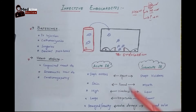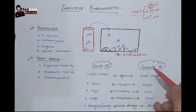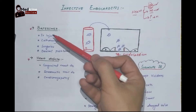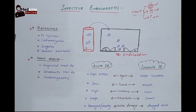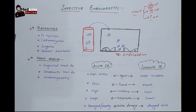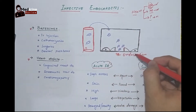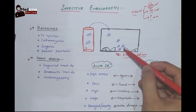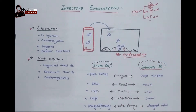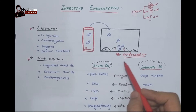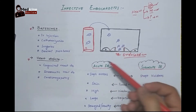The most common type of infective endocarditis is the subacute type. Let me explain the pathogenesis of subacute infective endocarditis. For that, we need two things: bacteremia and underlying heart disease. For example, if there is an abnormality in the endocardium or heart cell, and bacteria somehow get into the blood — that is called bacteremia.